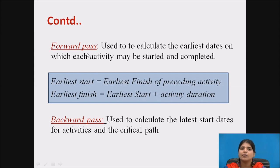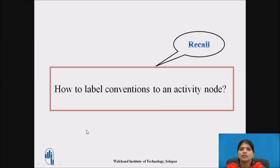With the help of the forward pass you calculate the earliest dates. Then the backward pass is used to calculate the latest dates — that is, the latest start date and the latest end date for the activities.